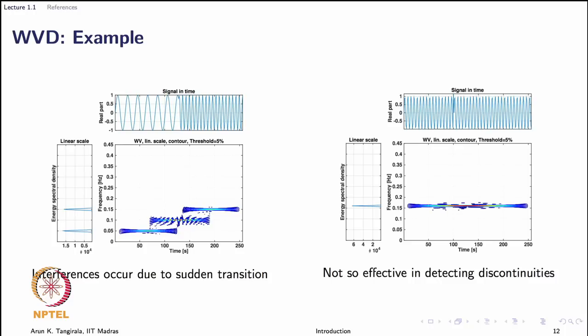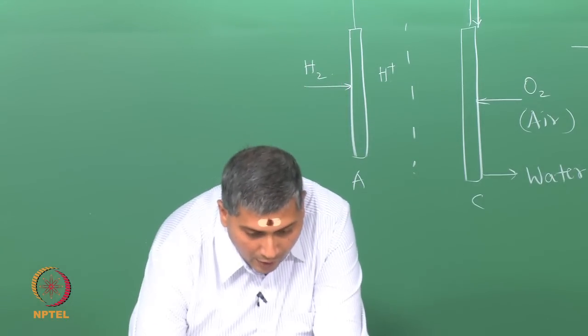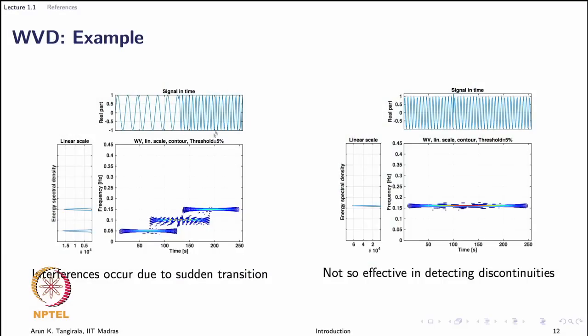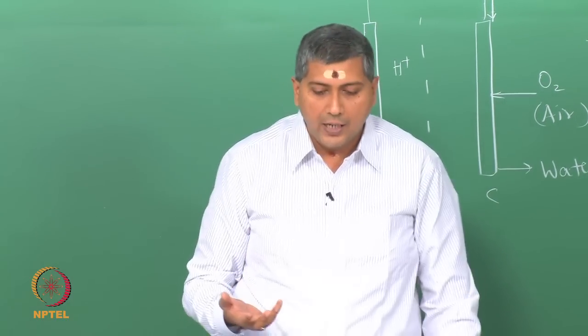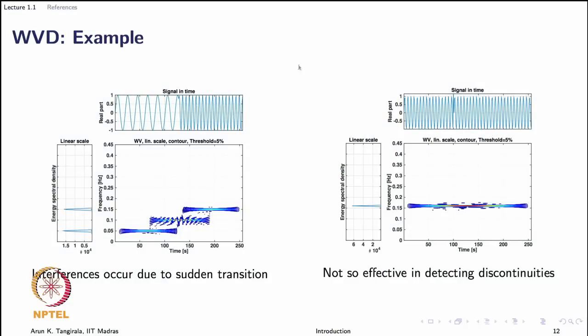To give you a feel of what Wigner-Ville distribution does: comparing this plot with the spectrogram, there is very fine localization of energy in frequency. We have frequency on the y-axis and time on the x-axis, but there is a middle term appearing called the interference term — that is one of the main drawbacks of Wigner-Ville distribution. Also, in the spectrogram you have to choose a window type and window length, whereas here no such choice is required, which is an advantage.